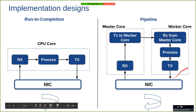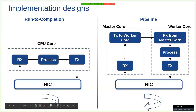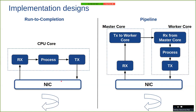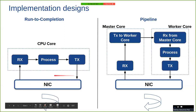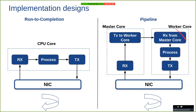Note that while the worker core is processing the packets, the master core is free to receive more packets from the NIC, whereas this was not possible in the RTC design. Because whenever a core is processing, it is in the processed state and cannot receive the next batch of packets unless it transmits the current batch. But the master core in the pipeline design is free to receive packets while the worker cores are processing them.